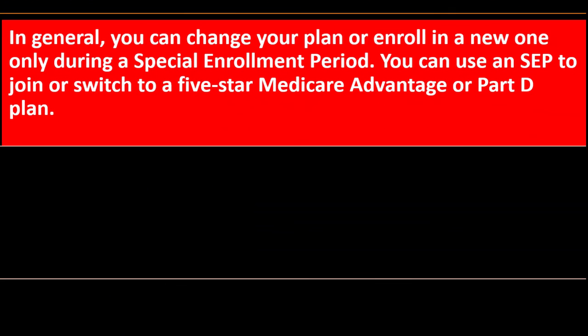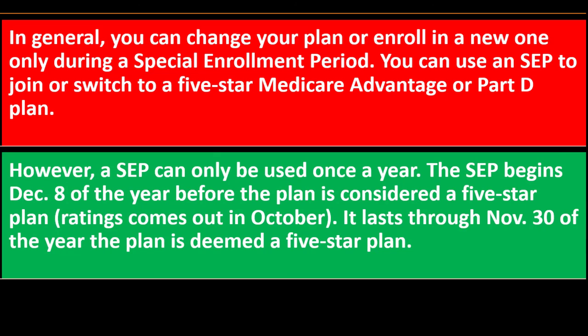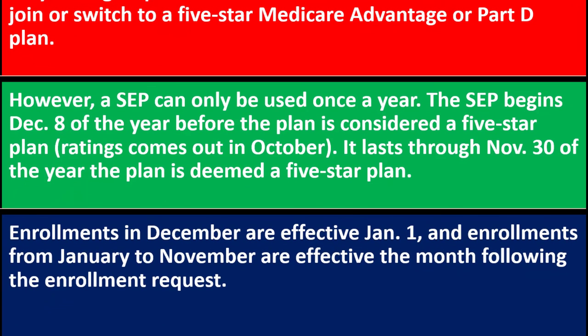For plan enrollment, you can change your plan or enroll in a new one only during a special enrollment period. You can use a SEP to join or switch to a five-star Medicare Advantage or Part D plan, but an SEP can only be used once a year. The SEP begins December 8th of the year before the plan is considered a five-star plan, with ratings coming out in October, and lasts through November 30th of that year. Enrollments in December are effective January 1st, and enrollments from January to November are effective the month following the enrollment request.